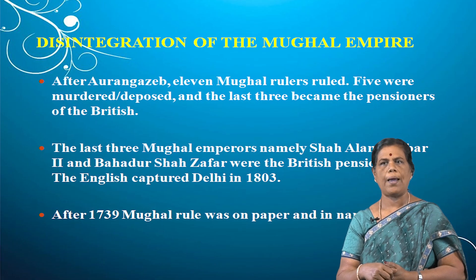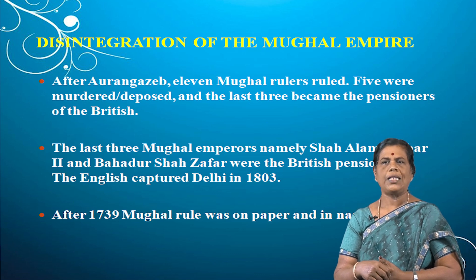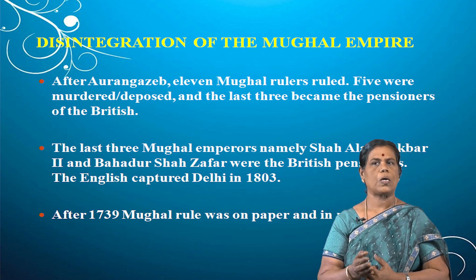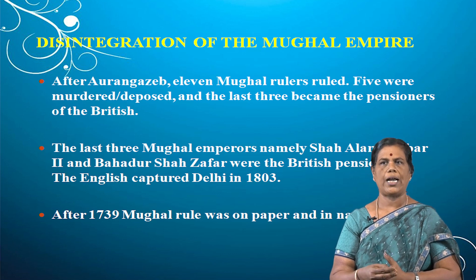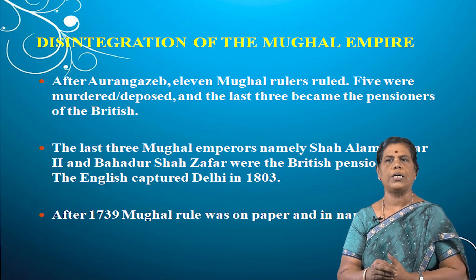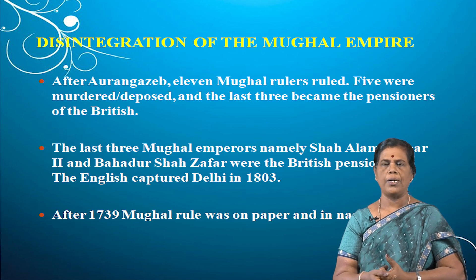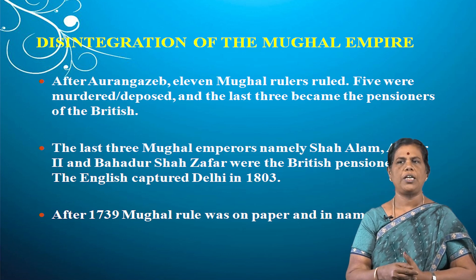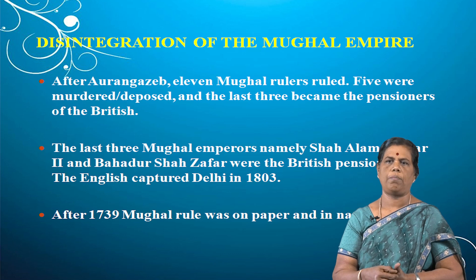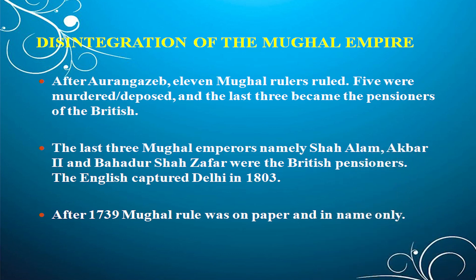What were the causes of disintegration of the Mughal Empire? Before that, a brief introduction about the empire: after Aurangzeb, 11 Mughal rulers ruled. Five were murdered and deposed. The last three Mughal emperors — namely Shah Alam, Akbar II, and Bahadur Shah Zafar — were the British pensioners. The English captured Delhi in 1803.